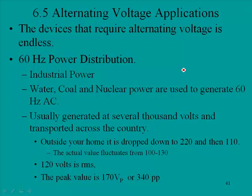Here we are in section 6.5, and we're completing this chapter with a little discussion about alternating voltage applications. The devices that require alternating voltage is endless, and if you think about all the different things that you can plug into an AC outlet and operate, the list is quite endless. The text starts with a little discussion about 60 hertz power distribution, and this is referred to as industrial power.